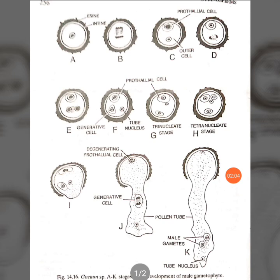As shown in figure G, the generative cell divides to form two non-flagellated, functional, and more or less equal male gametes. According to Kulkarni and Vasil, these two male gametes are equal. However, Pearson and Thompson in 1970 reported the formation of two unequal male gametes in some other species of Gnetum, so it varies from species to species.